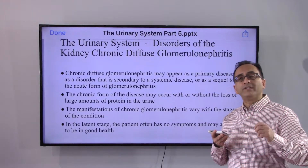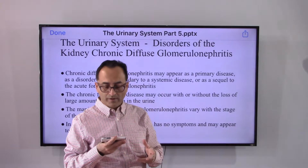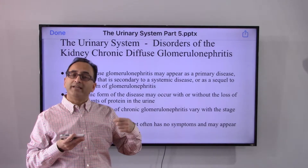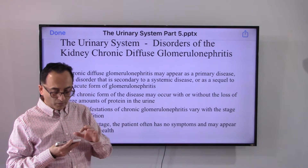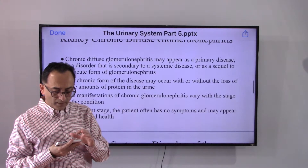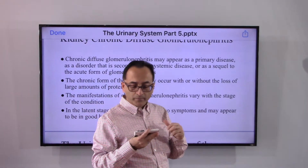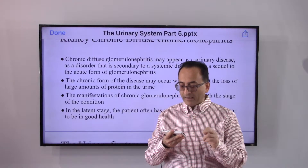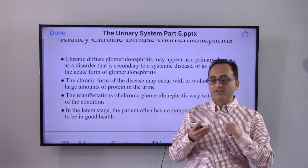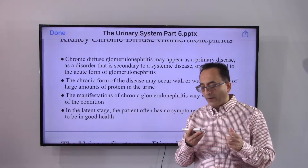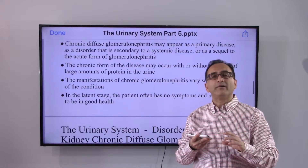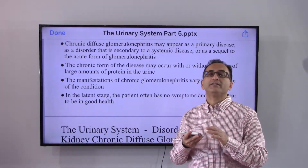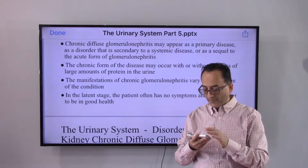The chronic version may occur as a primary disorder or secondary to some other systemic disease, or because repeated acute episodes lead to the chronic form. It is possible that there may or may not be significant loss of protein in the urine. The manifestations of chronic glomerulonephritis vary with the stage — whether minimal, moderate, or severe.